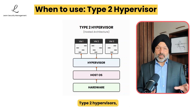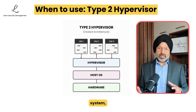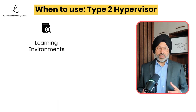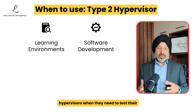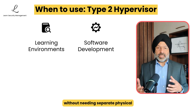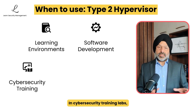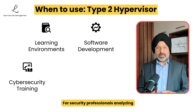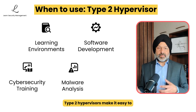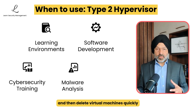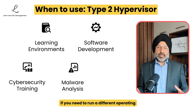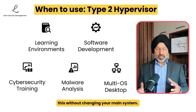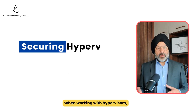When is a type 2 hypervisor the more suitable option? Type 2 hypervisors, which run on top of a regular operating system, are perfect for learning and testing — they are much easier to set up and use. Developers often prefer them when testing software on different operating systems without needing separate physical computers. In cybersecurity training labs, they let students practice techniques in a safe, controlled environment. For security professionals analyzing malicious software, type 2 hypervisors make it easy to create, use, and then delete virtual machines quickly after each analysis. And if you need to run different operating systems on your regular work computer, type 2 hypervisors let you do this without changing your main system.